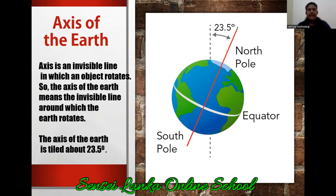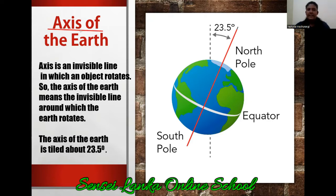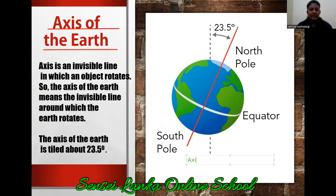So like this, in the planet there is a line like this. It is not real, it is imaginary. We are thinking that there is a line like this. It has a name. What is the name? Axis of the earth. For this line, we say axis.